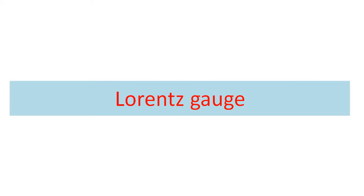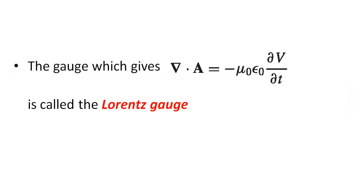Lorentz gauge. We already discussed gauge transformation, and then we discussed Coulomb gauge. Now we need to discuss what is Lorentz gauge. In Coulomb's gauge, the condition is that del dot A equals zero.